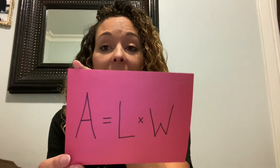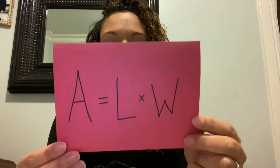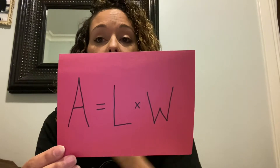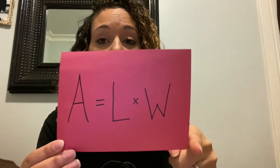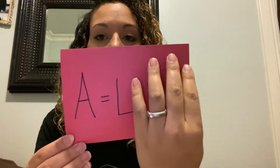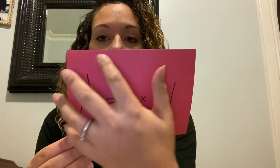The area of a rectangle equals the length times the width. Area is everything that covers the surface — all of this red portion where I have this writing would be the area. And the area equals length times width.